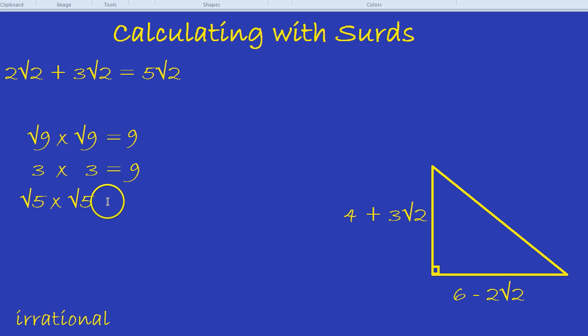Root 5 times root 5, we don't actually know what root 5 is, but we know what the answer is. Just like with root 9 times root 9, it became 9. Root 5 times root 5 is 5. Root 47 times root 47, we don't know what it is. We know the answer is 47.